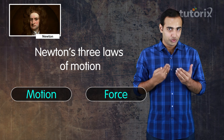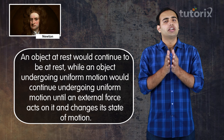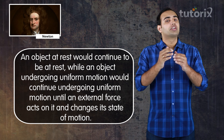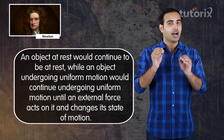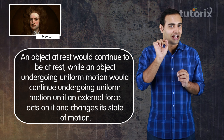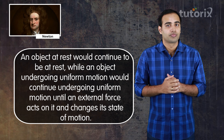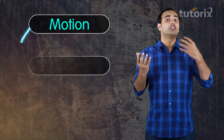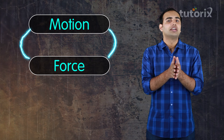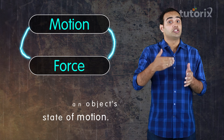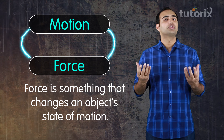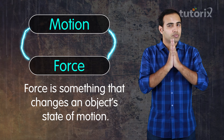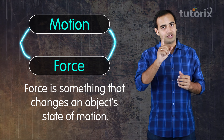According to Newton, an object at rest would continue to be at rest, but an object undergoing uniform motion would continue undergoing uniform motion until an external force acts on it and changes its state of motion. So this is how Newton connects motion with the idea of force — that force is something that changes an object's state of motion, which can either be rest or motion in a particular direction. Let me explain this using a real life example.